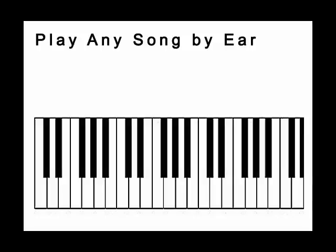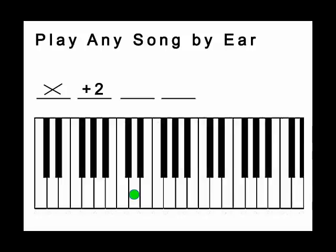Let's use the first four notes of the song Silent Night. Let's try to understand the song. The song is made up of four different notes with different distances in between. We start at the first note, we move up two notes — and yes, the black notes count — then we move down two notes, then finally we move down three notes.